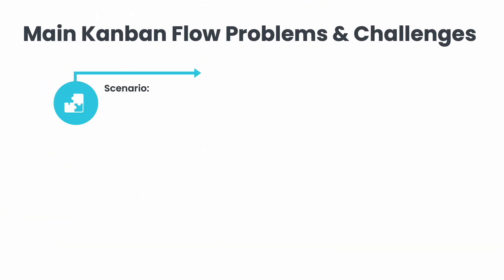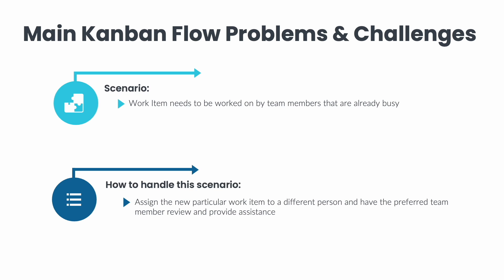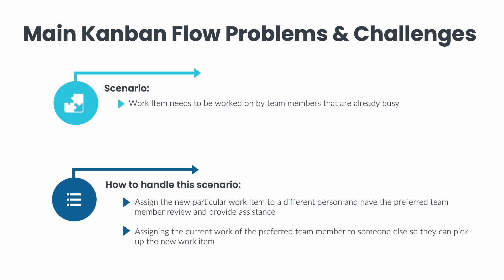Another common Kanban scenario is when a new work item needs to be worked on by team members who are already busy. This could happen when a team member has a specific technical skill needed for a type of work. When this work comes in and that preferred team member is busy, you could assign the new work item to a different person and have the preferred team member review and provide assistance when needed. This might take longer, but it expands knowledge across the team, which will help with future bottlenecks.